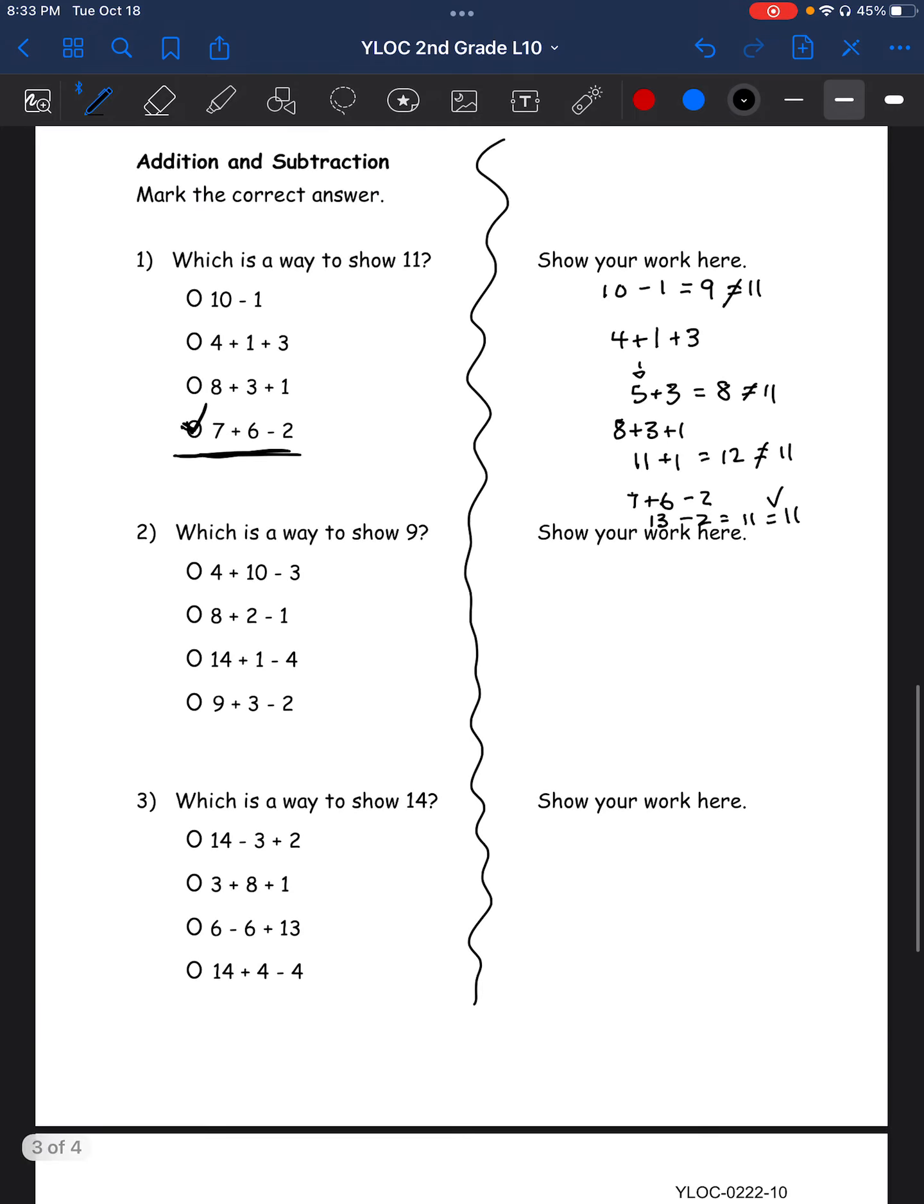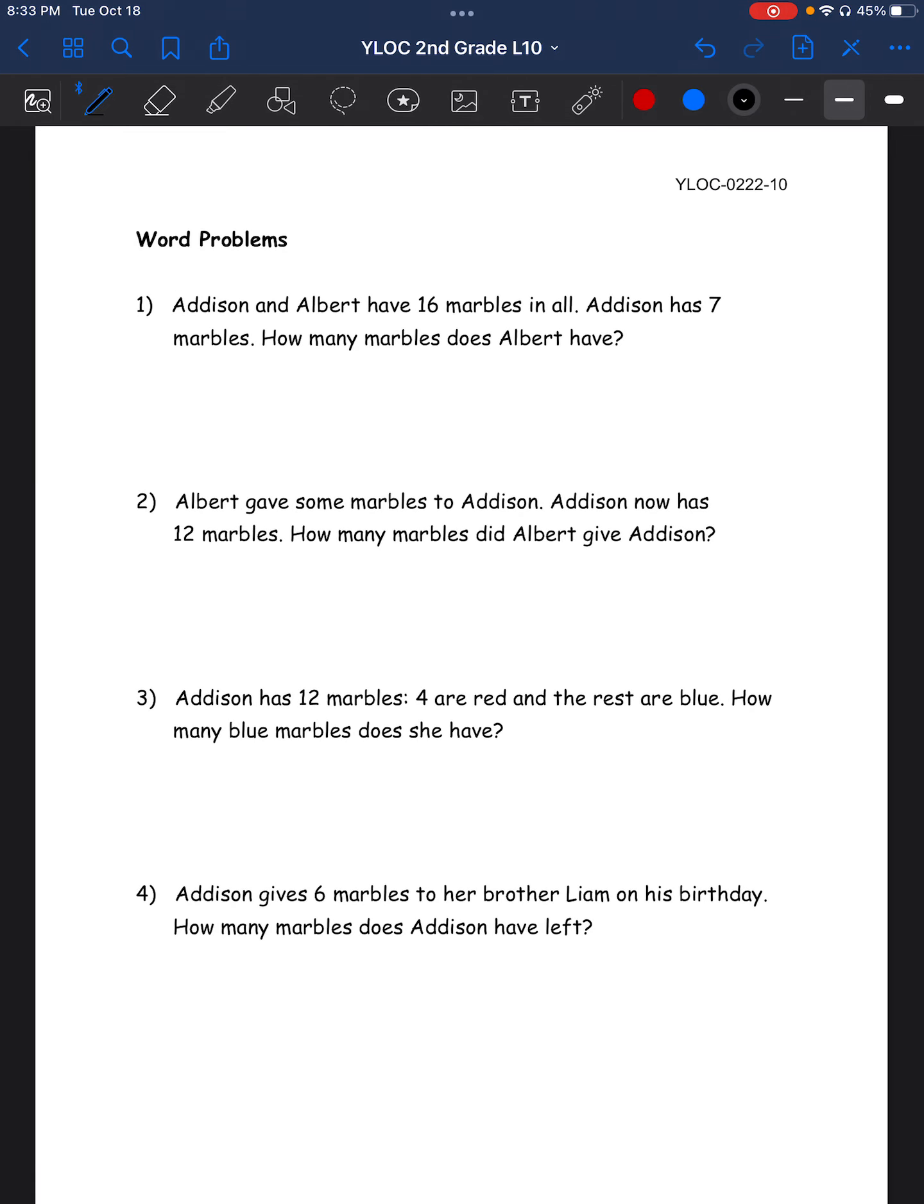Word problems. Addison and Albert have 16 marbles in all. Addison has 7 marbles. How many marbles does Albert have? So if Albert and Addison make up to 16 marbles and Addison has 7, that means Albert's, which is the number of marbles we don't know, plus 7, which is Addison's marbles, equals 16. So that means it's 16 equals 7 plus the number, right? So if we rewrite the equation, we can find what this number is by subtracting it from this side. So minus 7 equals the number. 16 minus 7 is? So 16, 15, 14, 13, 12, 11, 10, 9. So it equals 9, right? So Albert has 9 marbles.